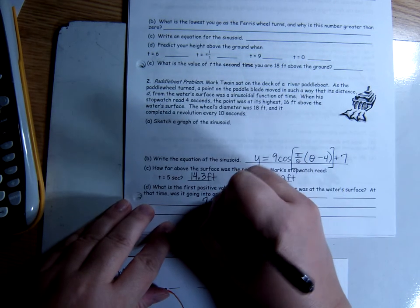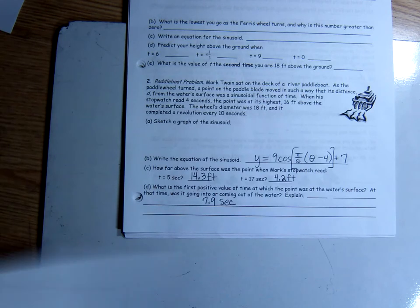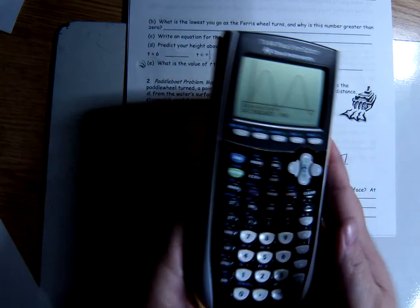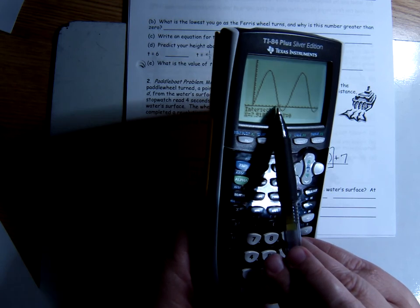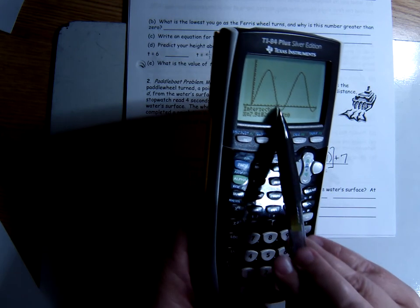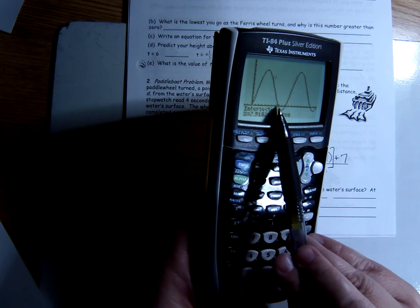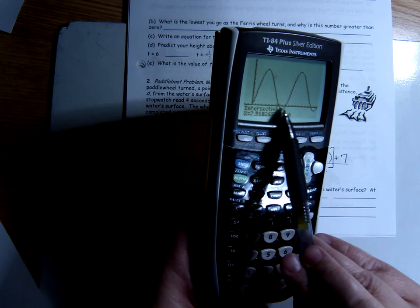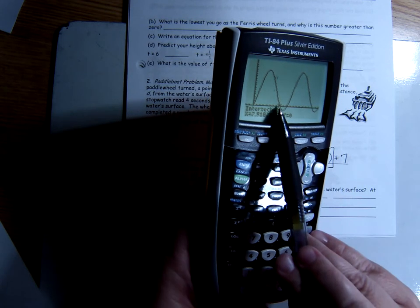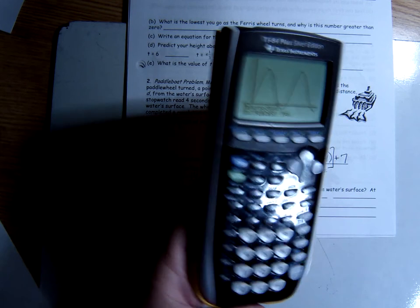Now, the last question it asks me here is, at that time, was it going into or coming out of the water explained? At that time, that's going into the water, because here it is, and it's dipping down below the water surface and coming back up. So, that was going into the water, because then it goes beneath the water surface, and then it turns back around. So, it was before the turning point that comes back up. So, that's why I know it was going into the water.